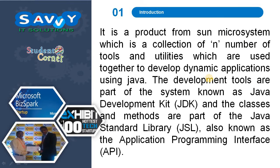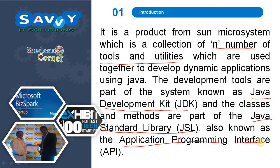Java is a product from Sun Microsystems, which is a collection of tools and utilities used to develop dynamic applications. The development tools are part of the system known as the Java Development Kit. The classes and methods are part of the Java standard library, known as the Application Programming Interface.